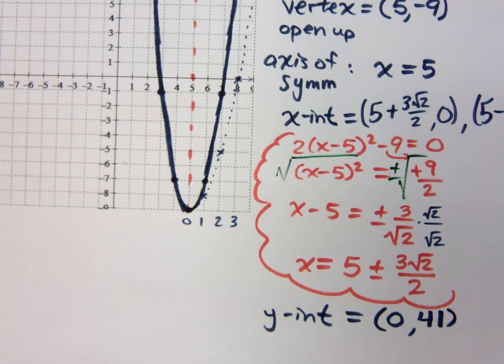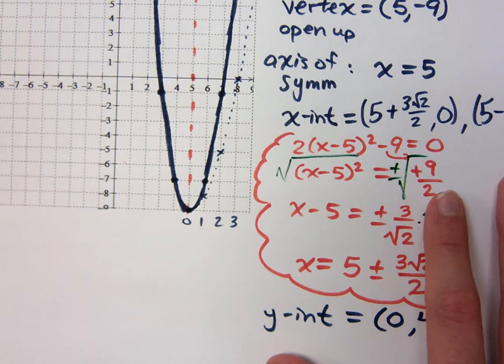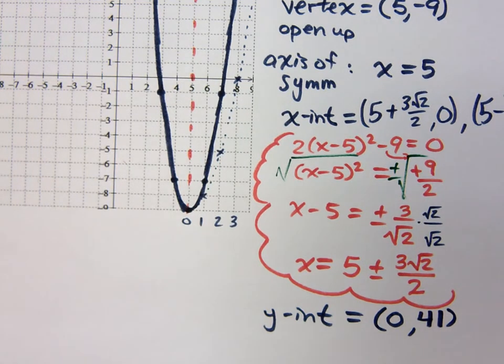Otherwise, it would still be the right answer at plus or minus 3 over the square root of 2. And some textbooks and some classes, it is okay to leave square roots in the denominator. It just helps with things. But for simplifying, for us, we typically don't leave the radical down there. So that's how you want it.